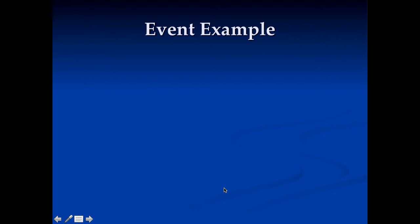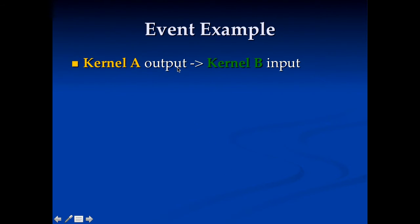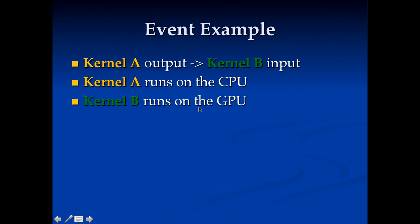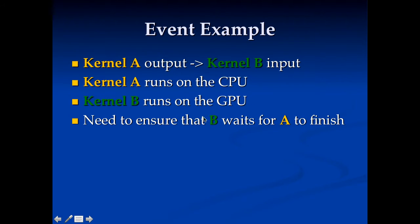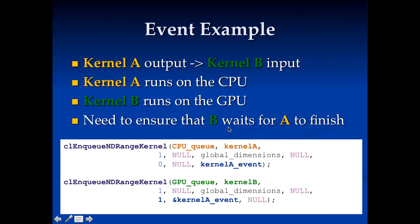Here's an example: say kernel A generates some output that kernel B needs as its input, but kernel A runs on the CPU and kernel B runs on the GPU. We need to make sure kernel B waits for kernel A to finish, because if B runs before A is finished it'll have garbage data as input and you'll get corrupt values. The solution is straightforward: when we enqueue kernel A, we get an event back, and when we enqueue kernel B, we tell it to wait on that one event. This causes kernel B to wait and not execute until kernel A finishes.